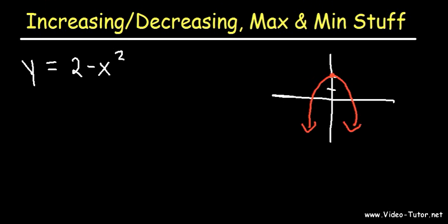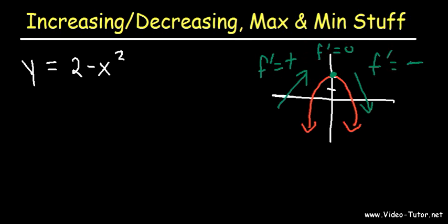On the left side, you can see the function is increasing — that means the first derivative is positive. On the right side, the function is decreasing, so the first derivative is negative. At the top, that's where the first derivative is equal to 0, and that's where you have your local maximum. So that's how you can analyze it graphically, but let's analyze it algebraically.